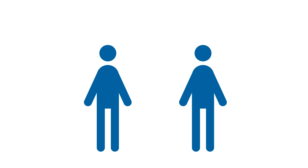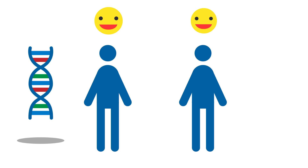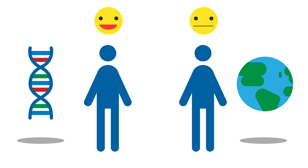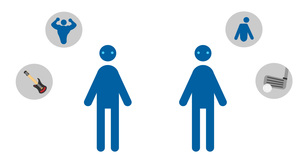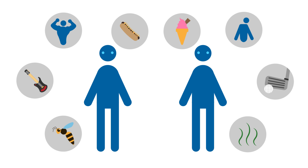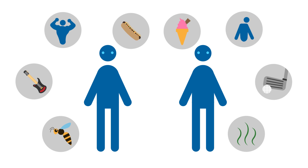To answer these questions, scientists can do experiments using identical twins. If the characteristic in both twins is the same, then it is most likely due to genetics. If it is different, then the environment has played an important role. For example, identical twins will have the same eye colour, as this is only due to genetics, but they will have different personalities, talents, likes and dislikes, and this shows that these are also influenced by the environment.